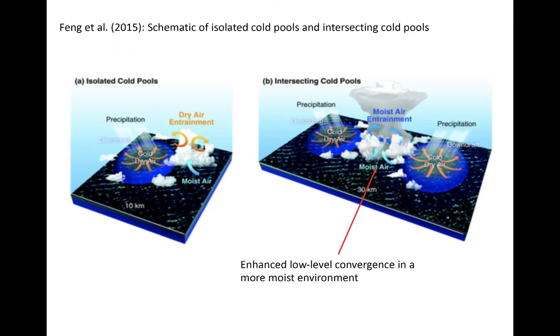Numerous cold pools can co-exist in the same environment, and their collision enhances convergence and promotes deep convection. On the left is an example of a rainfall-induced cold pool. Low theta-E air descends and spreads out through the boundary layer. Shallow convection forms at the edge of the cold pool, where high theta-E environmental air is forced over the head of the advancing gravity currents.